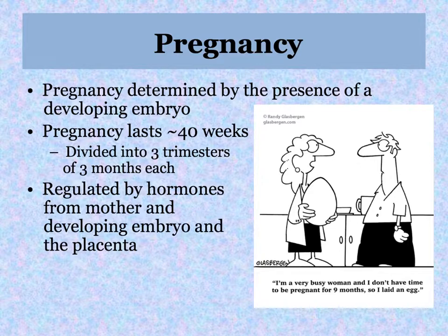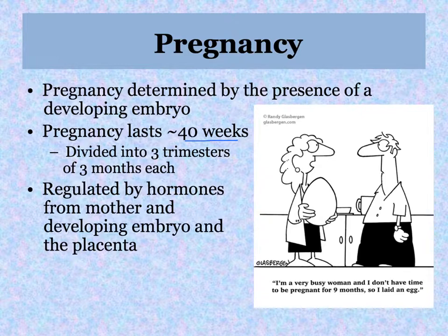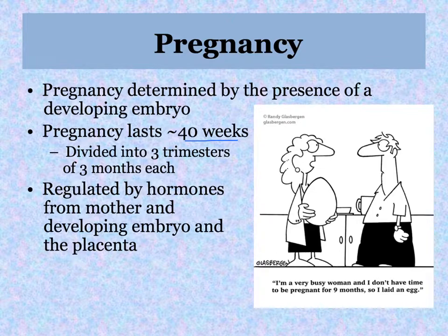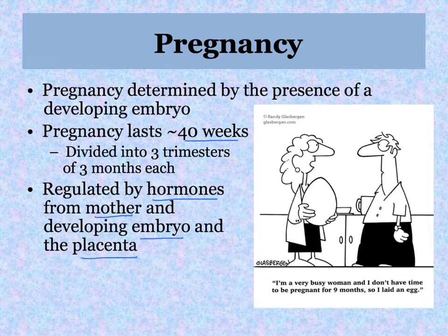Pregnancy is determined by the presence of a developing embryo — you're either pregnant or not pregnant. Pregnancy in humans lasts 40 weeks, close to ten months, and is divided into three trimesters of three months each. All of the information about pregnancy is organized around the trimesters. Pregnancy is regulated by hormones both from the mother and the developing embryo and the placenta, working together.